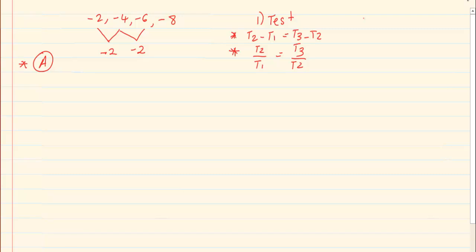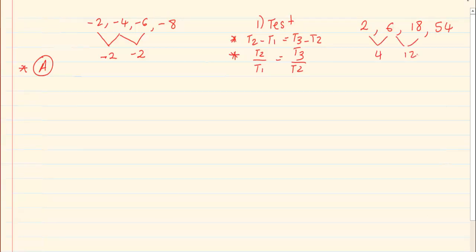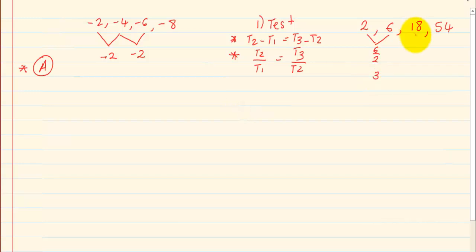Let's take the following number pattern: 2, 6, 18, 54. If you do the arithmetic test, 6 minus 2 equals 4, and 18 minus 6 equals 12 — so that pattern cannot be arithmetic. Now we try geometric: term 2 divided by term 1 — 6 divided by 2 equals 3, and 18 divided by 6 equals 3. So we know that number pattern is geometric. If you randomly assume arithmetic or geometric and you're incorrect, you've lost all the marks. Always start with the test.